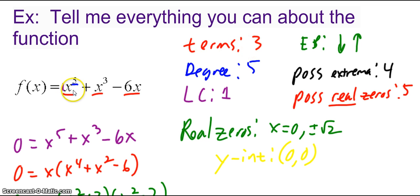Okay, so there are three terms here: x to the fifth, x cubed, and negative 6x. The degree is 5, that's the highest exponent. The leading coefficient is 1. That's the number in front of the term with the highest exponent.